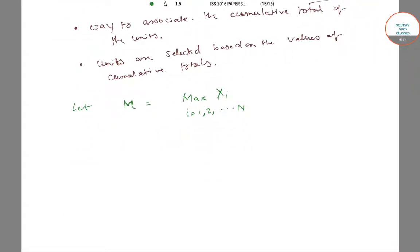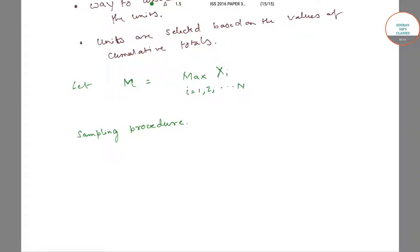The sampling procedure will have the following steps. The first step is that we have to select a pair of random numbers.